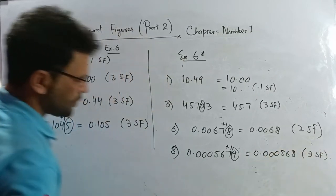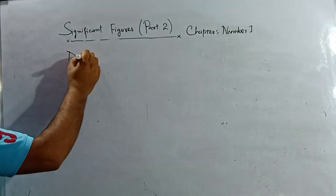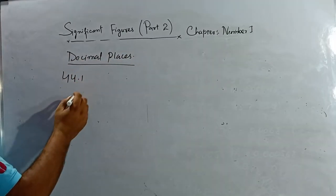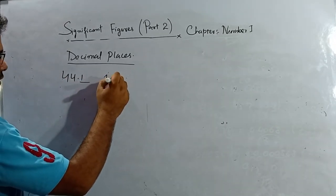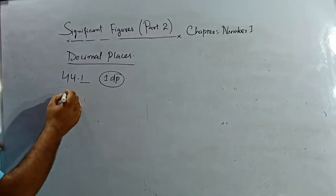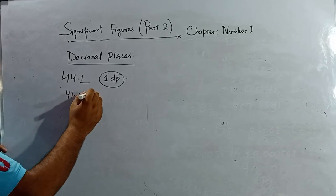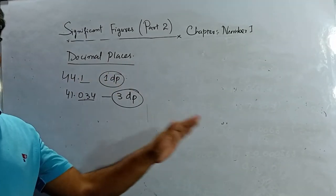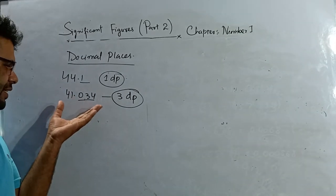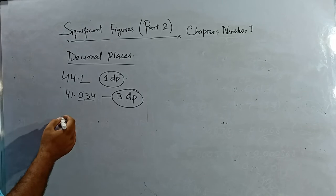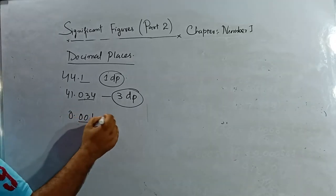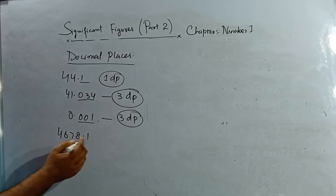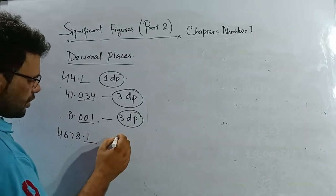Now decimal places. For example, 4.1 — after the decimal there is one number, so there is one decimal place. 41.034 has three decimal places. The numbers after the decimal are known as the decimal places. 0.001 has three decimal places. 4678.1 has only one decimal place.